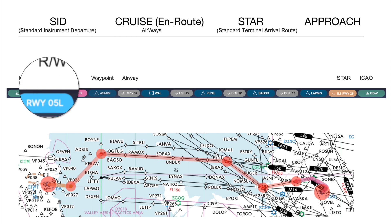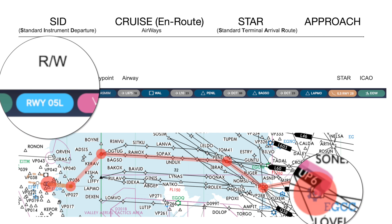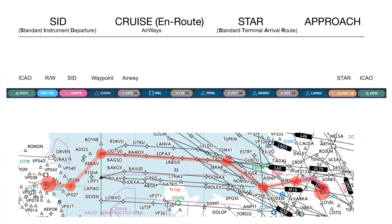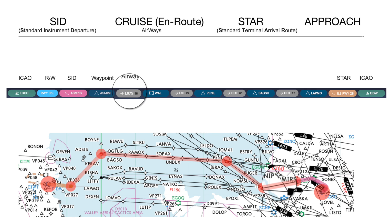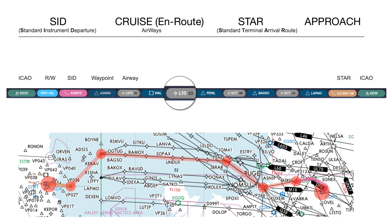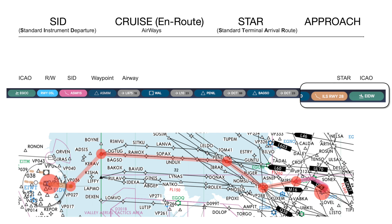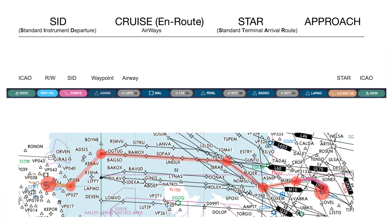We have a SID, a standard instrument departure called ASMI1S. We then have a series of waypoints and airways — a waypoint is a heading and altitude determined point which we put into the computer, and airways are simply highways in the sky. Then we come closer to the runway and join a STAR, a standard terminal arrival route. We're not going to do a STAR in this tutorial — we're just going to land into Dublin and use the ILS into Dublin runway 28. So just understand those three things: a SID, cruise en route or airways, and a STAR and an approach. We'll put all these waypoints and SIDs into the flight management computer.